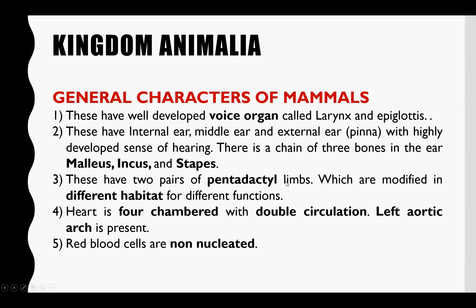پانچ انگلیوں والے پیر ہوتے ہیں جو مختلف habitats کے according adapt ہوئے ہوتے ہیں۔ جس طرح humans اپنے lower limbs کو walk کرنے کے لیے استعمال کرتے ہیں تو ان کے hind limbs زیادہ powerful ہیں۔ اگر chimpanzees کی بات کریں تو وہ زیادہ تر trees پر time گزارتے ہیں اور four limbs کو زیادہ استعمال کرتے ہیں، اس لیے ان کے four limbs stronger ہوتے ہیں as compared to hind limbs۔